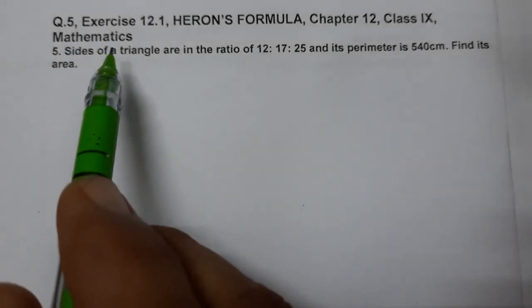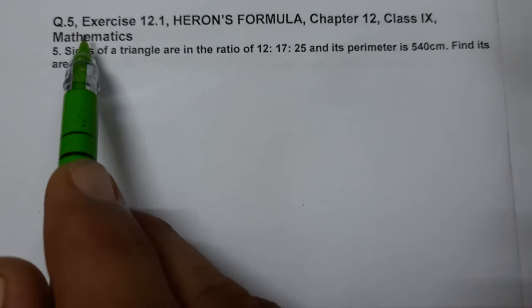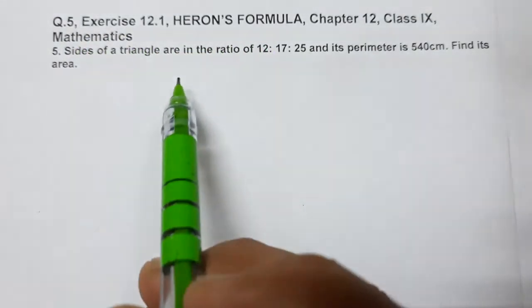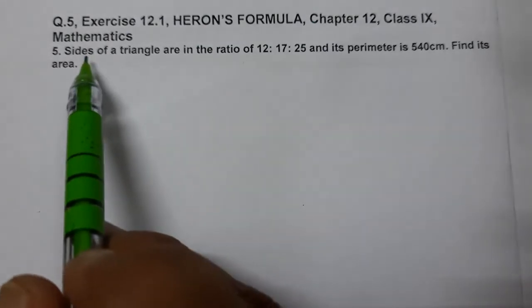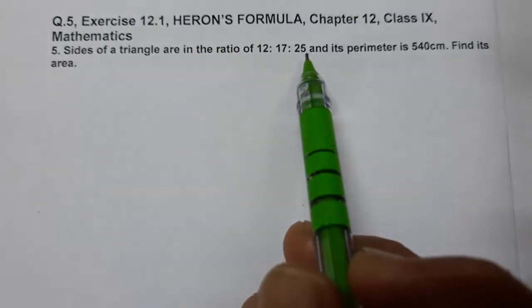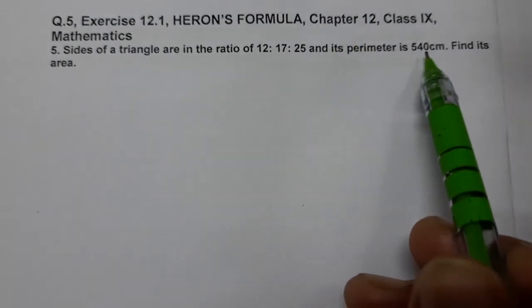Hello students, today we are going to do question number 5 of exercise 12.1, chapter number 12, Heron's Formula, class 9 mathematics. Sides of a triangle are in the ratio 12 is to 17 is to 25 and its perimeter is 540 centimeters.